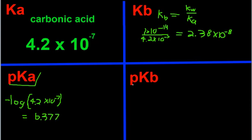So how do we figure out pKb from this? We can do this two different ways. We know Kb is 2.38 times 10 to the negative 8, so pKb has to be the negative logarithm of that.